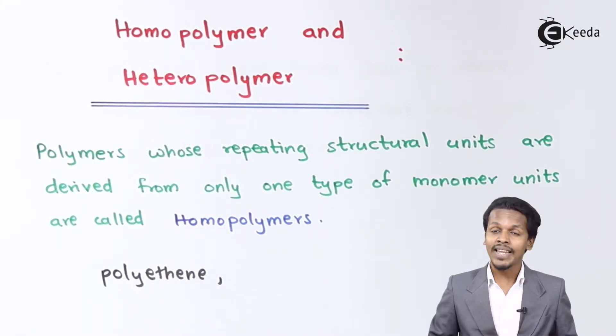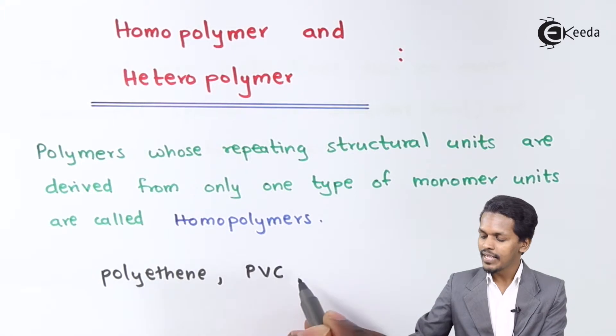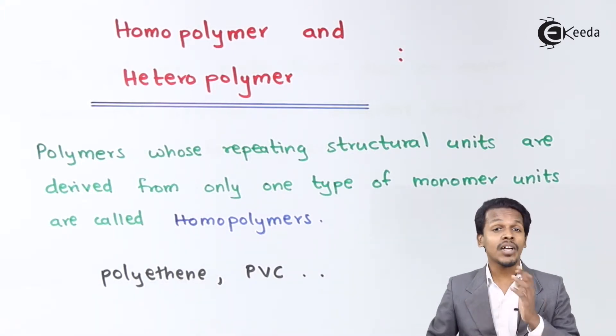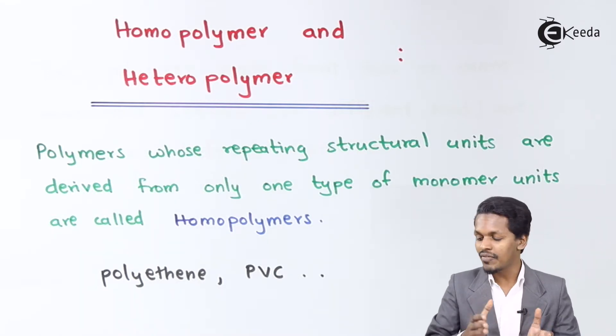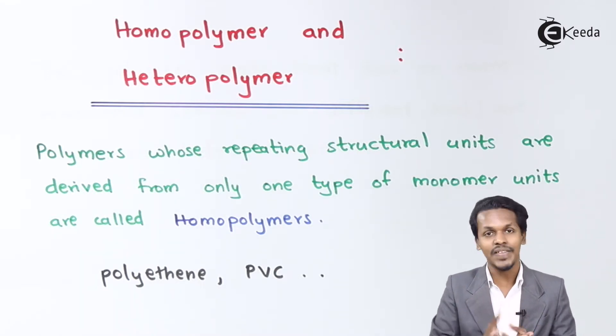If you talk about another example, that is PVC, polyvinyl chloride. Again, this is an example in which we see the monomers are of only one type. For polyvinyl chloride or PVC, the monomer is vinyl chloride.